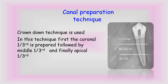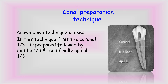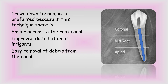The canal preparation technique we use with rotary systems is the crown down technique. In this technique, first the coronal one-third is prepared, followed by the middle one-third, and finally the apical one-third. Crown down technique is preferred because it provides easier access to the root canal. If we prepare the coronal portion first, we can easily access the deeper portion. Also, there will be easy flow of irrigants to the apex, and any debris present can comfortably flow out of the canal.